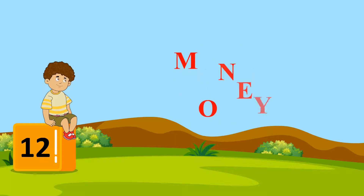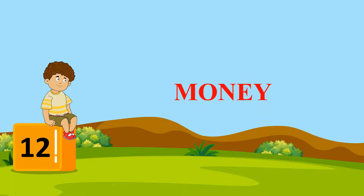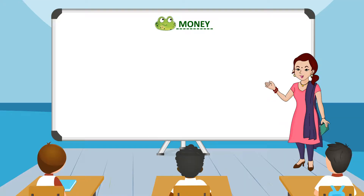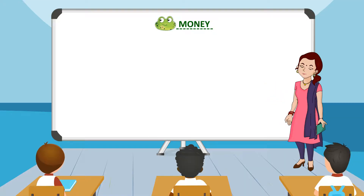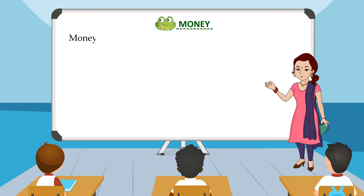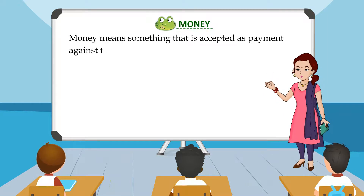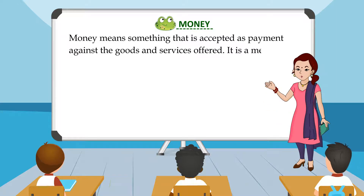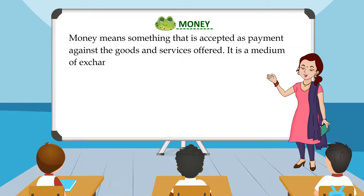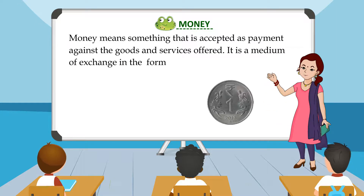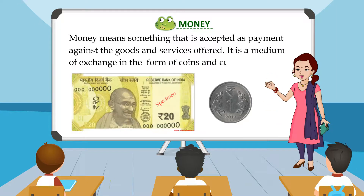Chapter XII: Money. Money means something that is accepted as payment against the goods and services offered. It is a medium of exchange in the form of coins and currency notes.